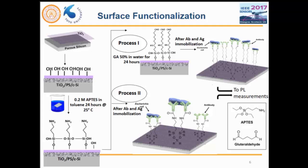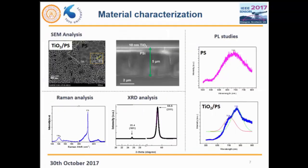Therefore, we go with process 2, where we do APTES and then introduce it to antibody and then the antigens. Coming on to material characterization — this is the SEM analysis. On top we see TiO2 on porous silicon; the underneath layer is porous silicon with pores of almost 120 nanometers, and tracks formed between the TiO2 material are almost 50 nanometers wide. In the cross-section, porous silicon is almost 5 microns while TiO2 deposited was almost 10 nanometers. Through Raman and XRD we confirm TiO2, with an XRD peak at 25.4° corresponding to the 101 phase of TiO2.